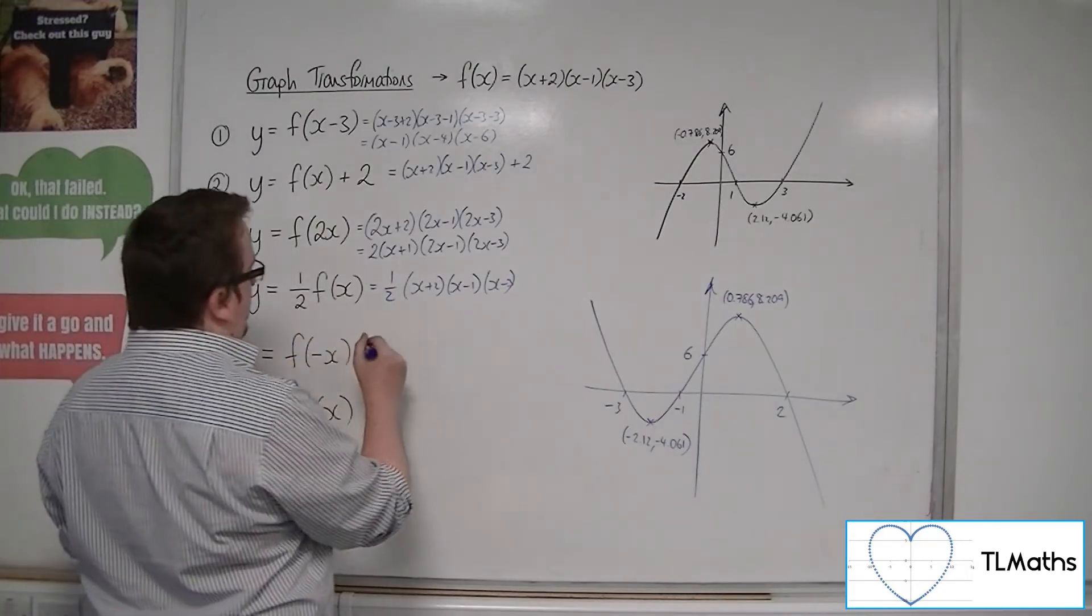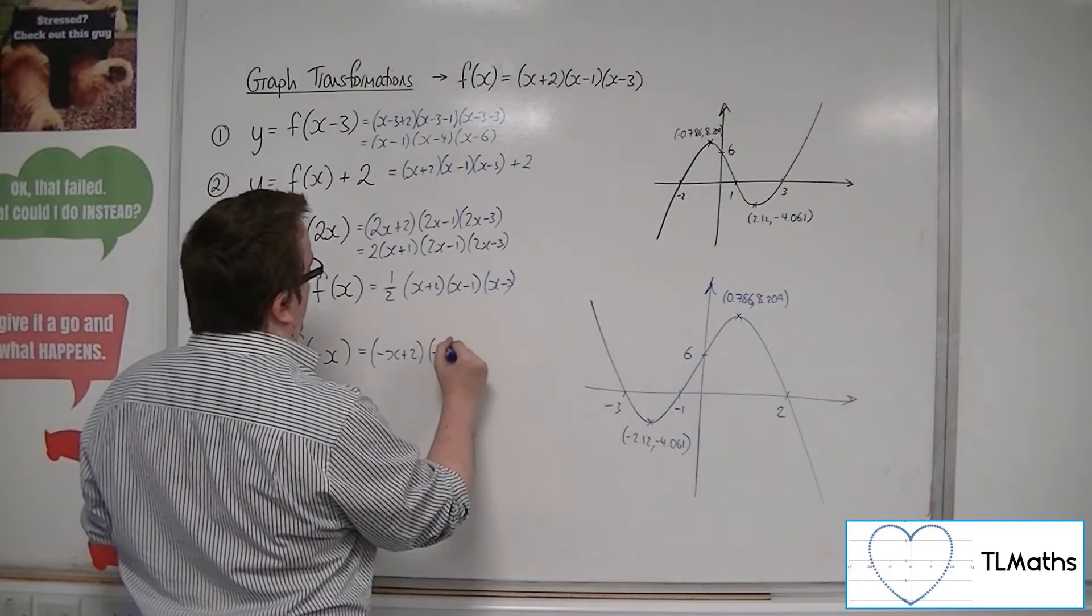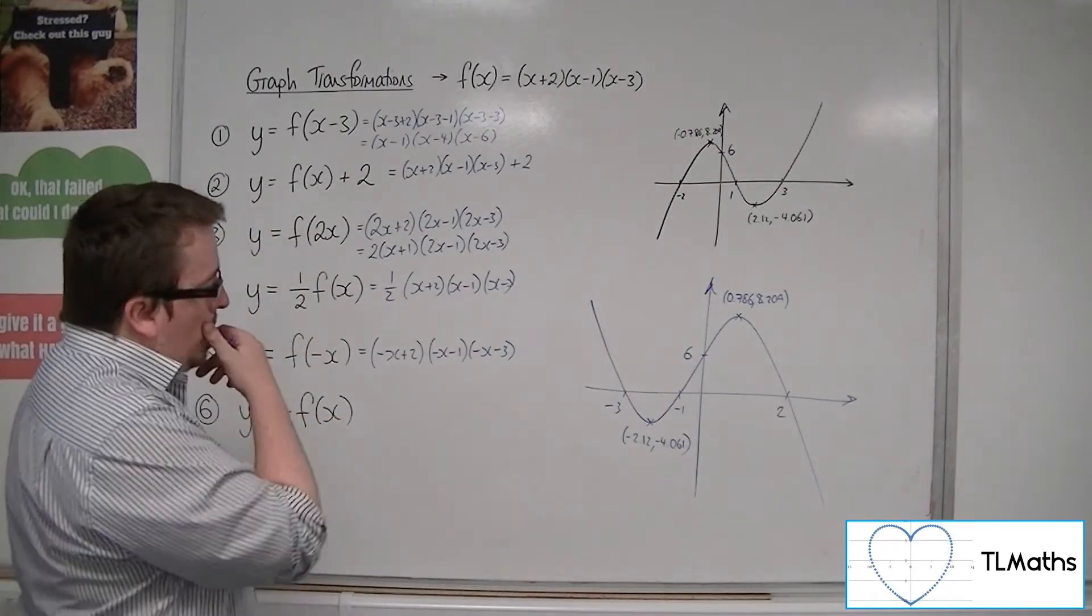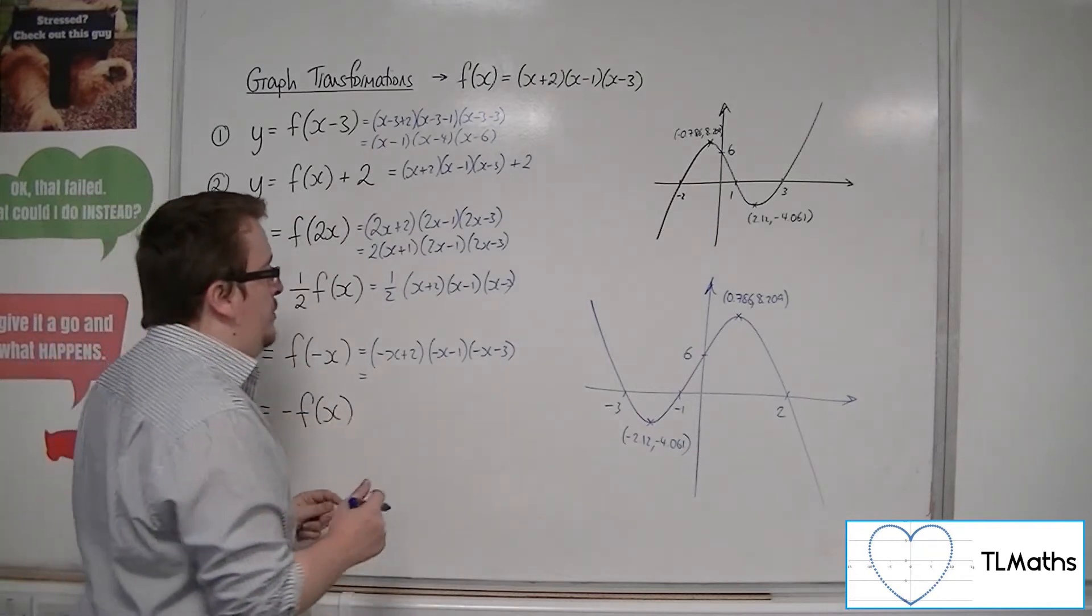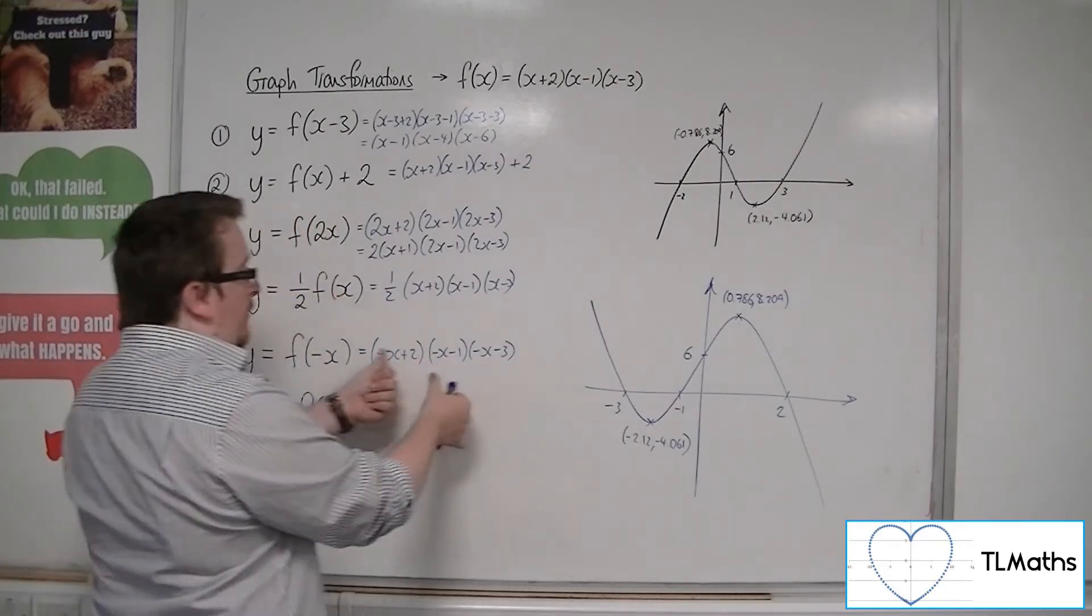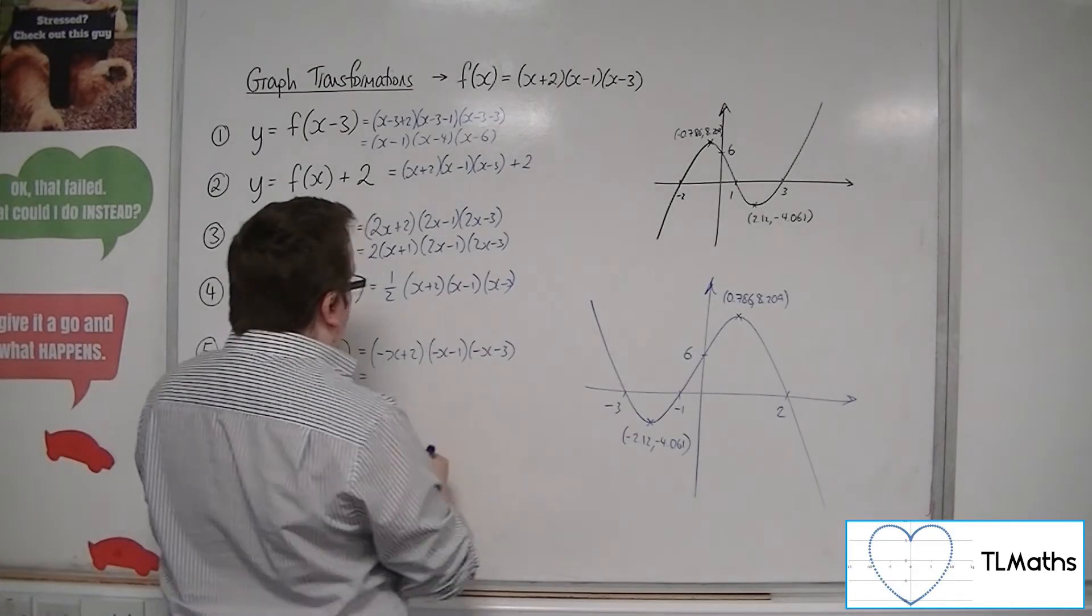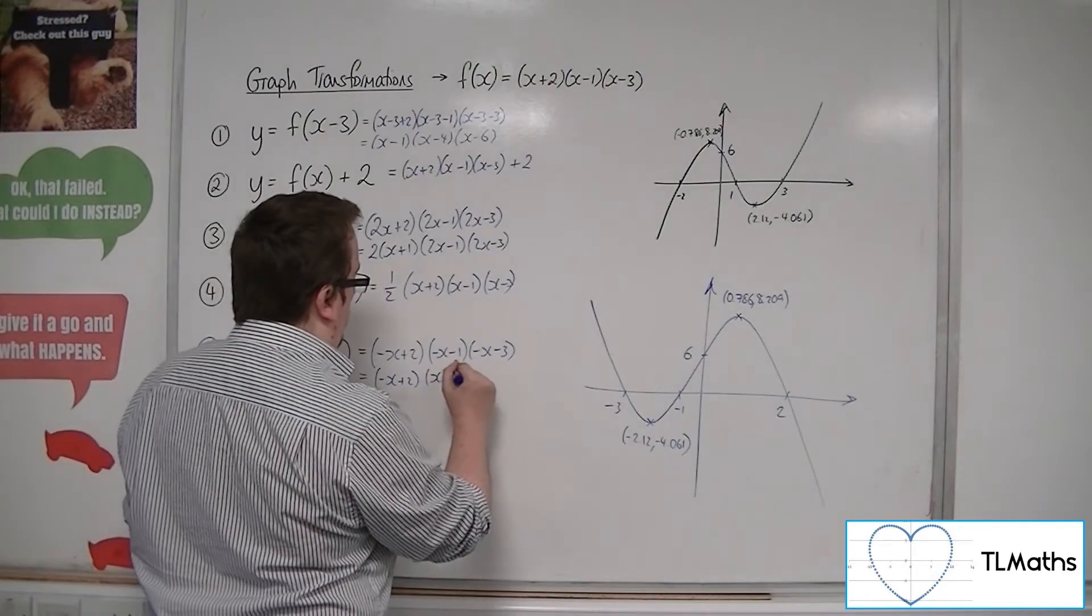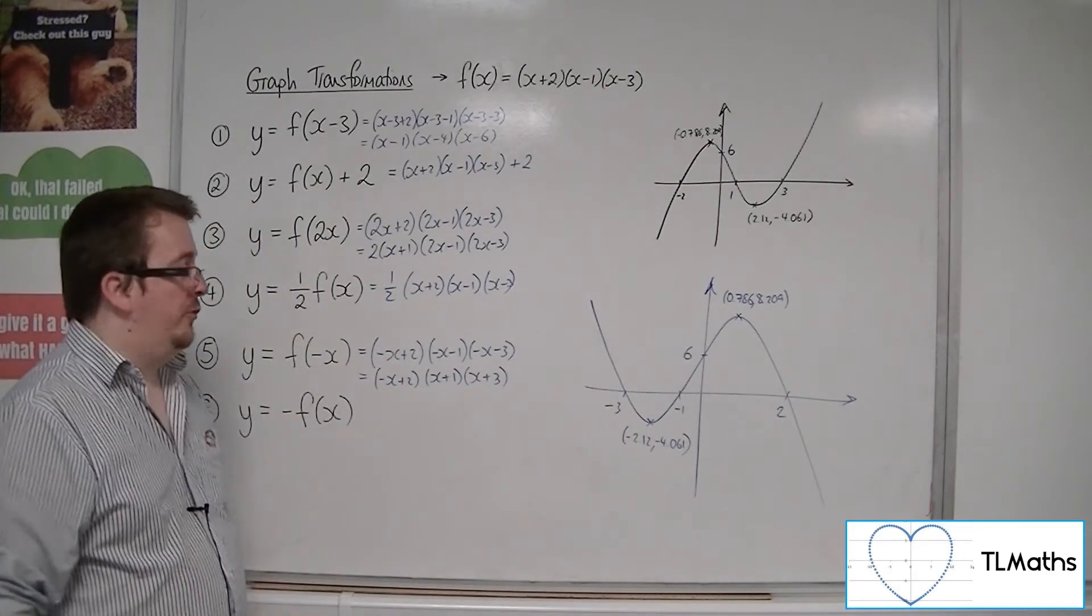So, if we replace each of the x's with -x, I get (-x+2)(-x-1)(-x-3). Now, it's not particularly nice looking like that. What you can do is you can pull the -1 out of both of those brackets, so factor -1 out of both of those. Obviously, when you've got -1 and -1 multiplied together, that will make 1. So, this is the same as saying (-x+2)(x+1)(x+3) by factoring both the -1's out.